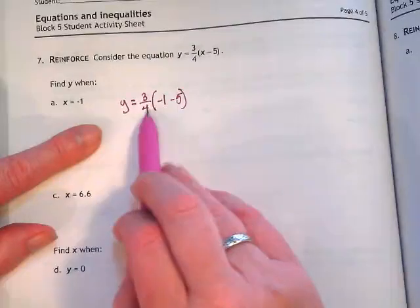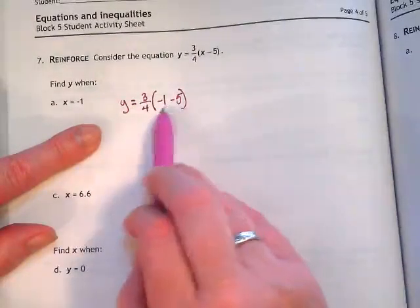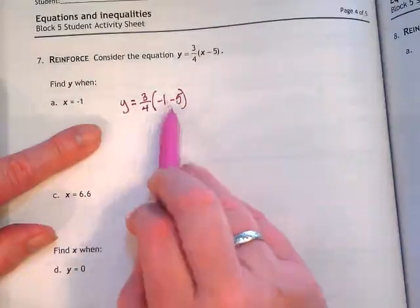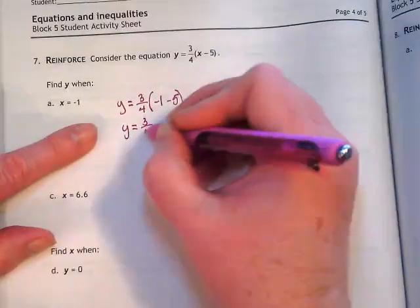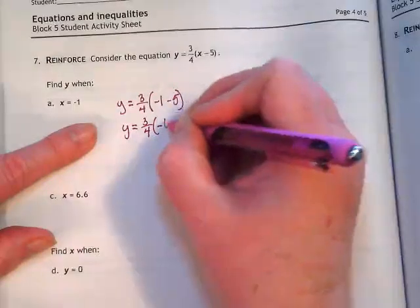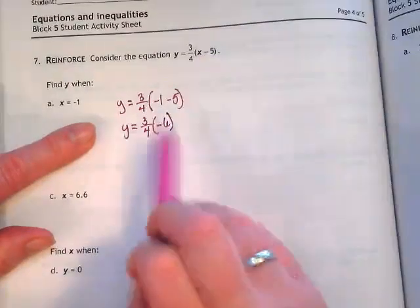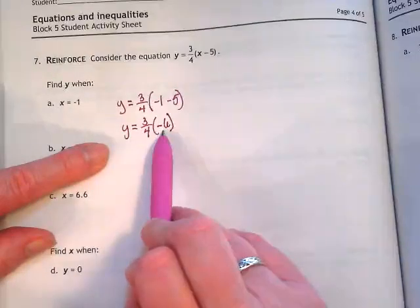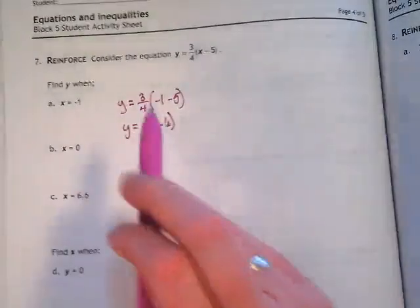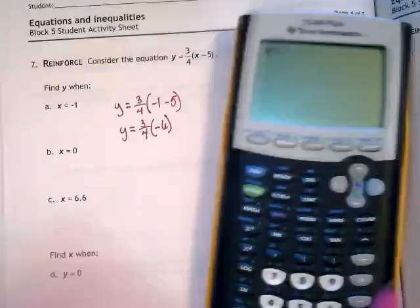Well, I can either distribute this or I can take care of what's in the parentheses first and I'm going to do what's in the parentheses first. So I get y is equal to three-fourths times negative 6 and then I'm just multiplying a fraction. So 3 times negative 6 would give us negative 18.